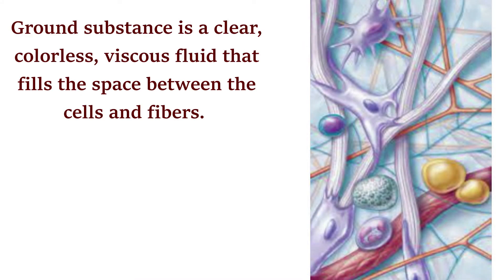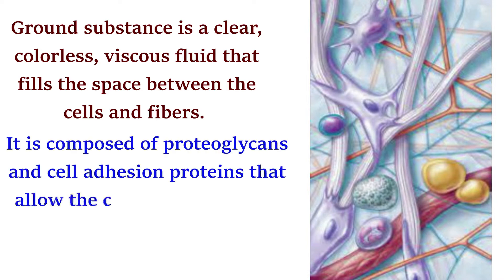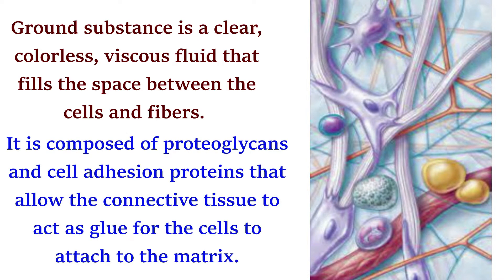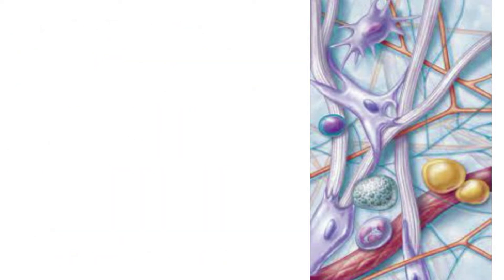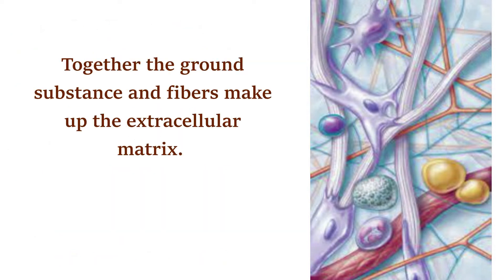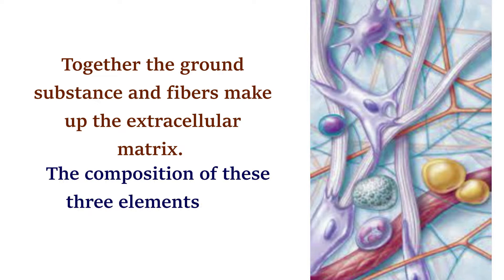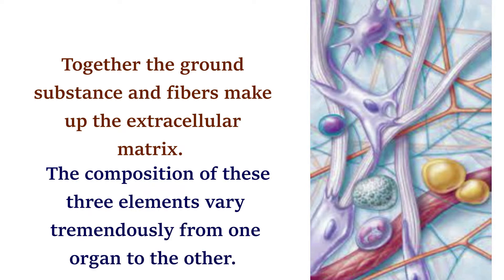Ground substance is a clear, colorless, viscous fluid that fills the space between the cells and fibers. It is composed of proteoglycans and cell adhesion proteins that allow the connective tissue to act as glue for the cells to attach to the matrix.